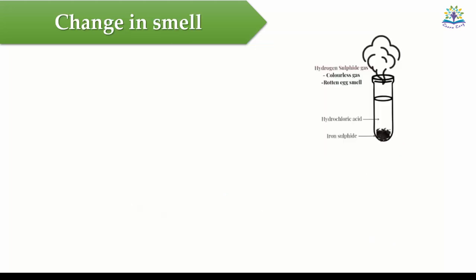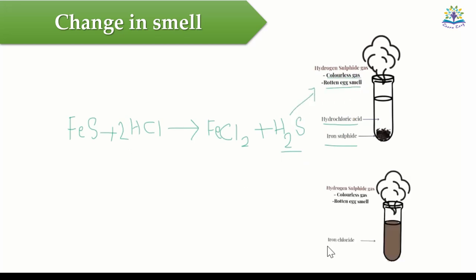Some reactions can be indicated by the change in smell. Take some powdered iron sulfide and add it to dilute hydrochloric acid. Iron chloride and hydrogen sulfide are formed. Hydrogen sulfide formed here is a colorless gas with a rotten egg smell. This change in smell indicates the reaction has taken place here.